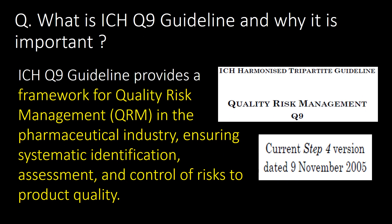Welcome. We will start with some basic questions and then go into detail. First question: what is ICH Q9 guideline and why is it important? ICH Q9 guideline provides a framework for quality risk management (QRM) in the pharmaceutical industry, ensuring systematic identification, assessment, and control of risks to product quality.